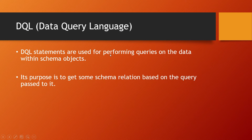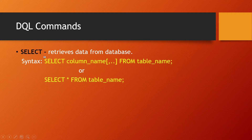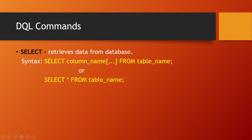DQL statements are used for performing queries on the data within schema objects. Their purpose is to get a schema relation based on the query passed. The one and only DQL command is SELECT — it retrieves data from the database and is the most basic command in an SQL query. Syntax: SELECT column_name FROM table_name, or SELECT * FROM table_name, where * selects all columns.